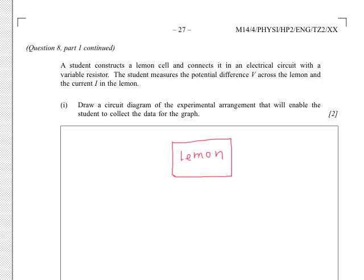Now what's on the graph? The graph will be potential difference across the lemon and the current in the lemon. So let's have a look at what that circuit will look like. Now here is our lemon, so you can just simplify the diagram. And we need the potential difference across it. So our voltmeter will be here.